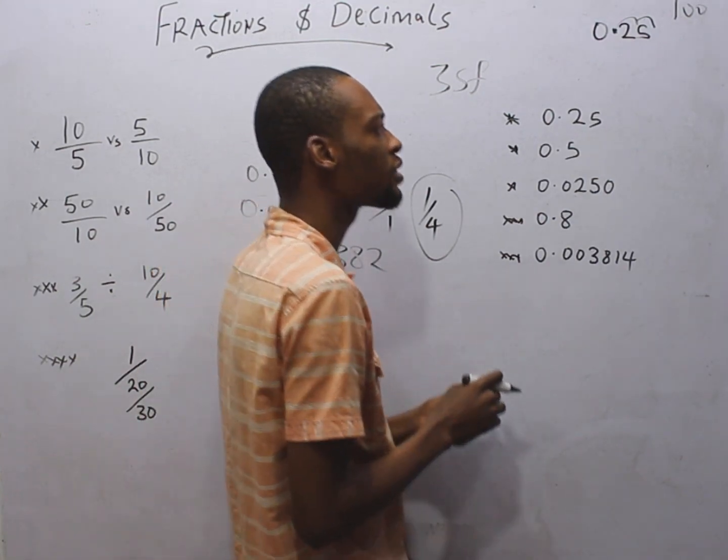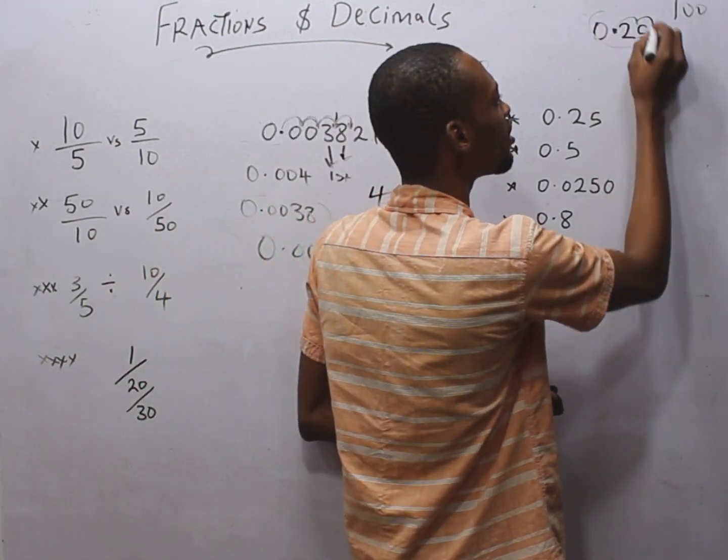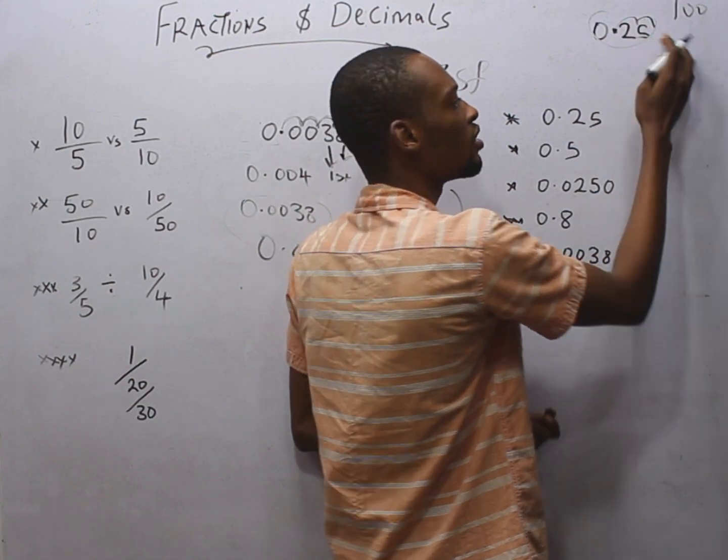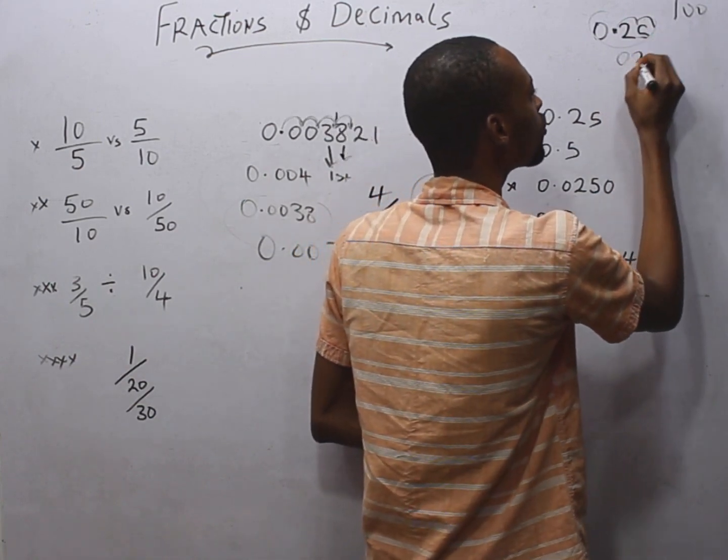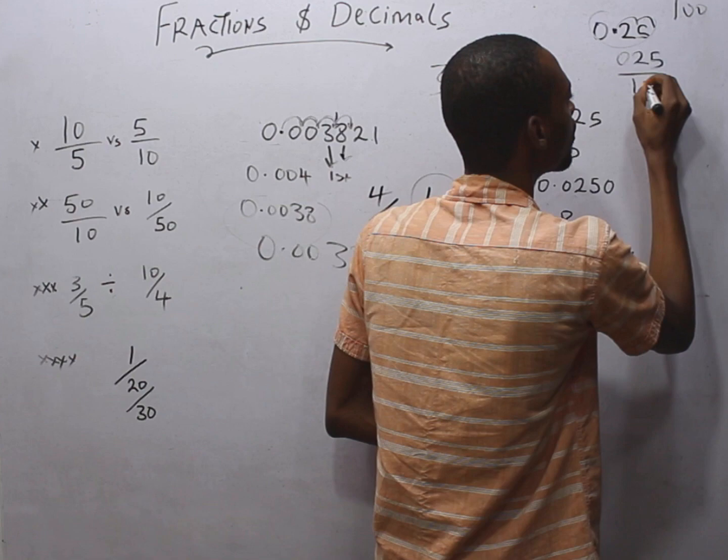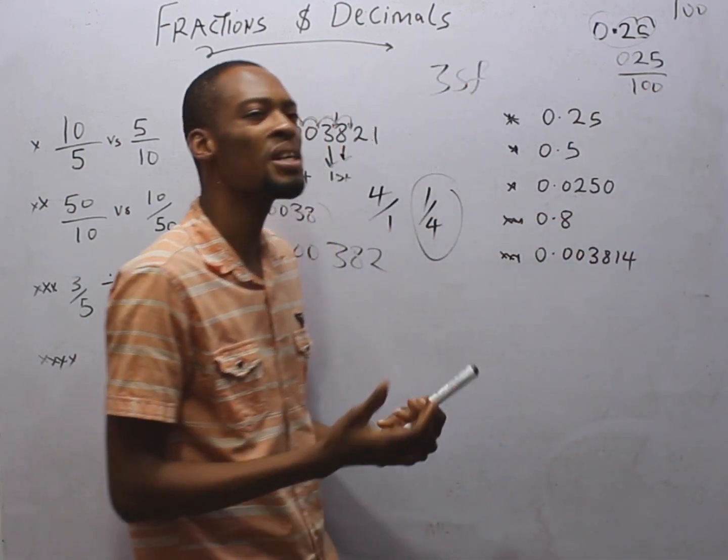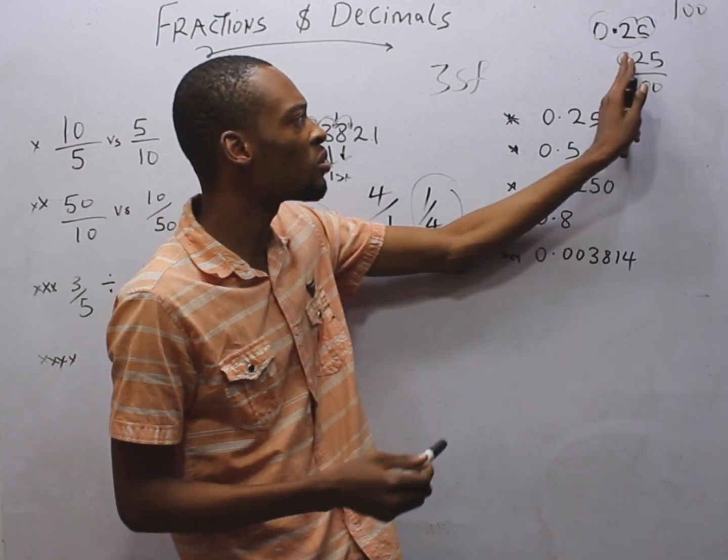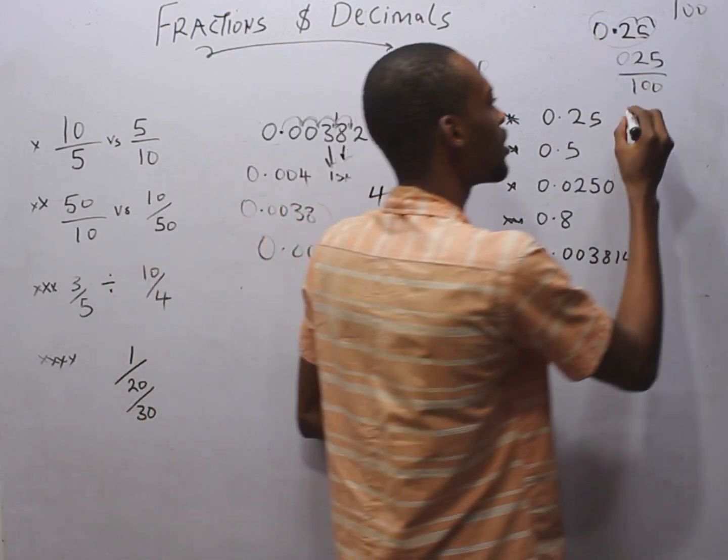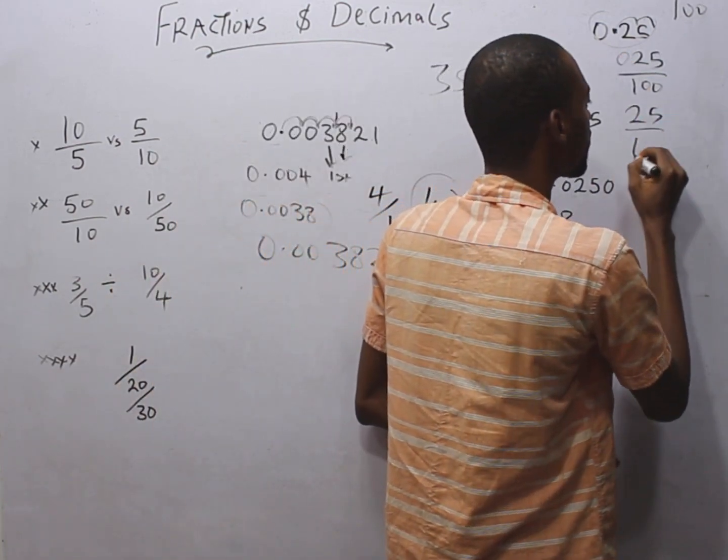Then you proceed. Write everything out minus the decimal point, because we already move this down. This becomes 25 over 100. Now, 0.25 is the same thing as 25, because this 0 doesn't count. So this is 25 over 100.